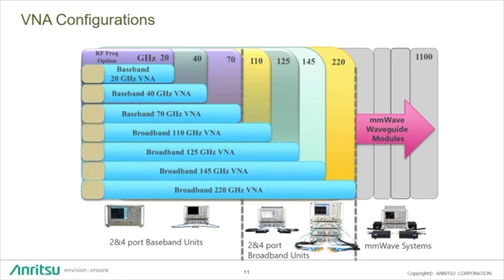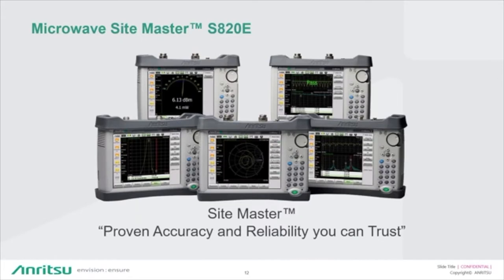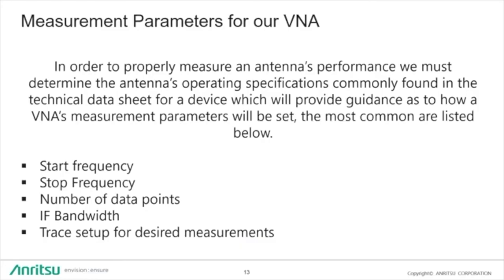When measuring antennas, we have to measure across the entire spectrum. We can do that with different models of Anritsu vector network analyzers — benchtop models going up to terahertz range, and handhelds, which are very common in cellular base station maintenance for measuring cables and antennas. The first step is to determine the specifications from the technical data sheet, which tells us the start and stop frequencies. We then choose the number of data points and IF bandwidth, and set up traces for our desired measurements.